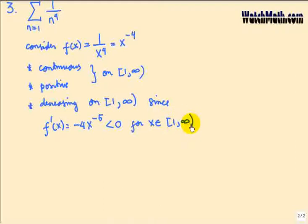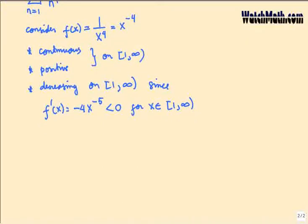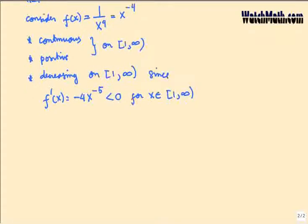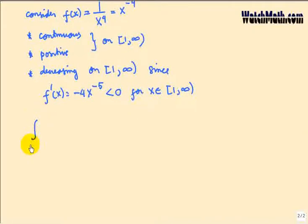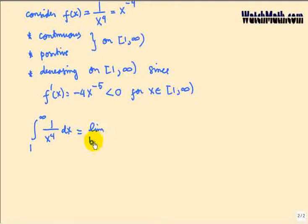We have checked that all conditions to use the integral test are met. We can go on by computing the integral from 1 to infinity of f(x) = 1 over x to the 4 dx. This is an improper integral, so we write it as the limit as b goes to infinity of the integral from 1 to b of x to the negative 4 dx.